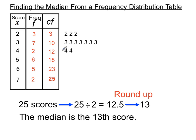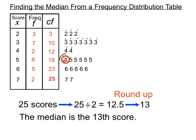Then the next couple of scores are fours, followed by six fives, and two sevens to finish. Writing it all out, we can see which one is the 13th score. Counting: one, two, three, four, five, six, seven, eight, nine, ten, eleven, twelve — the thirteenth score is a five. If we put all the threes, fours, and fives in order and crossed off either end, we'd end up with a five right in the middle.